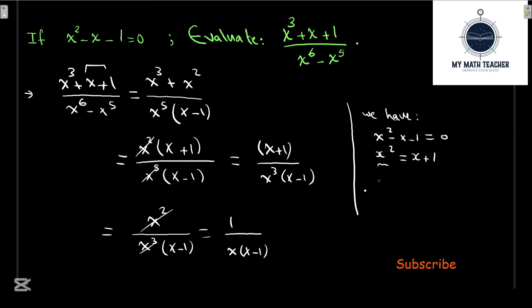Factoring, we get x(x - 1) = 1. Therefore, 1/(x(x - 1)) = 1/1 = 1.